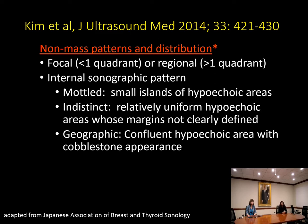Another classification system by Kim et al. in 2014 described non-mass patterns and distributions. This group removed ductal because it was already described in the BI-RADS lexicon. They described focal, which was less than one quadrant, or regional, which was greater than one quadrant, and focused on internal sonographic patterns including mottled, indistinct, and geographic — the geographic being a more confluent hypoechoic area with a cobblestone appearance.